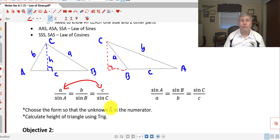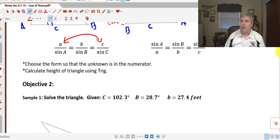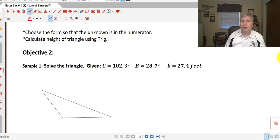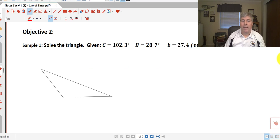You always want to choose the form so that the unknown is in the numerator. That just makes your algebra a little bit easier. You can also calculate the height of the triangle using trigonometry as well. We've got our two different versions of the law of sines here. And we'll use it to solve a triangle.